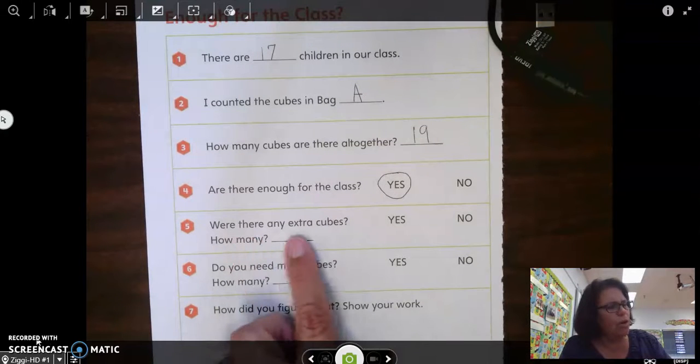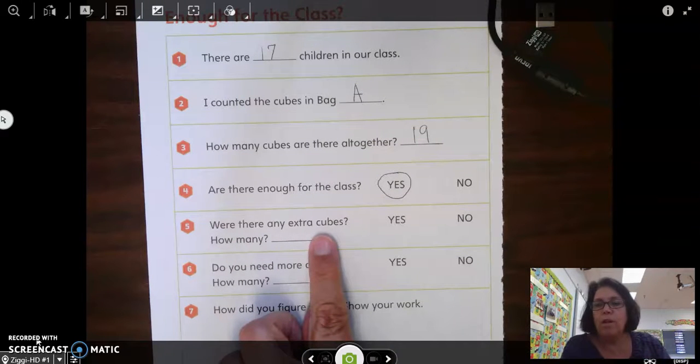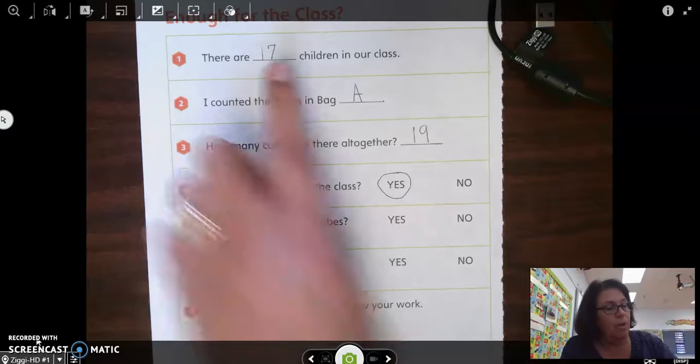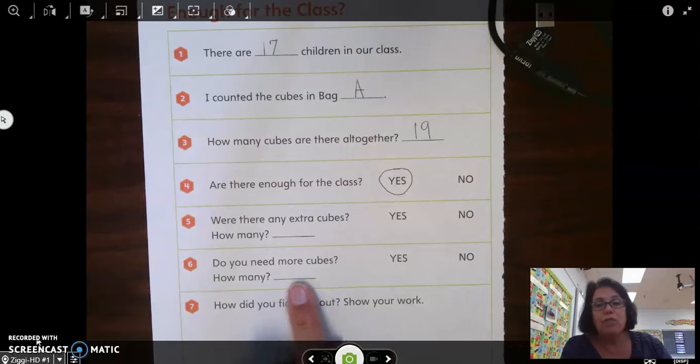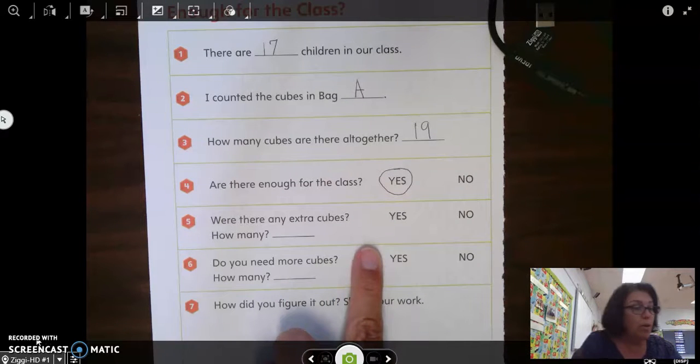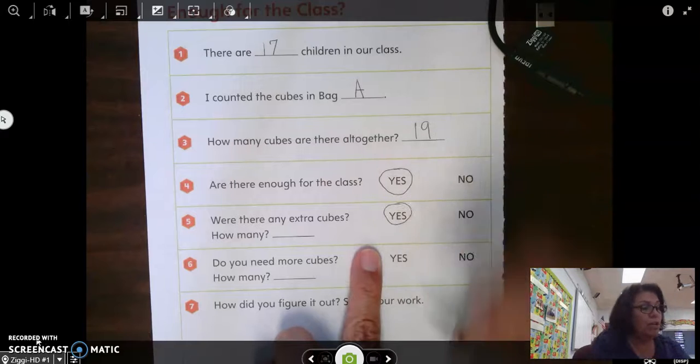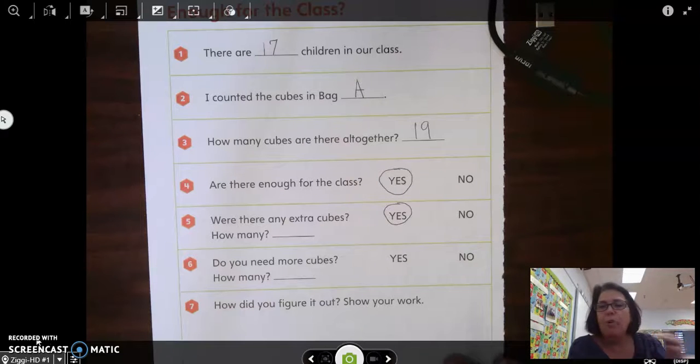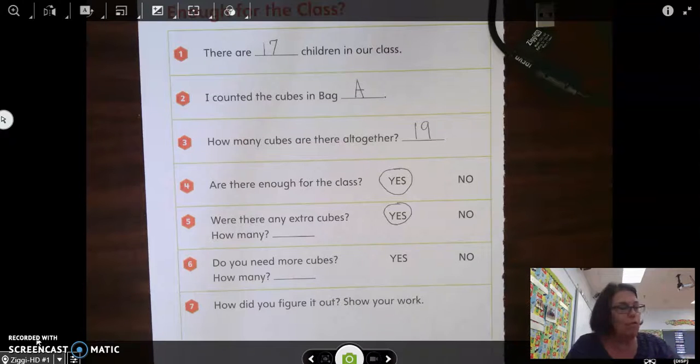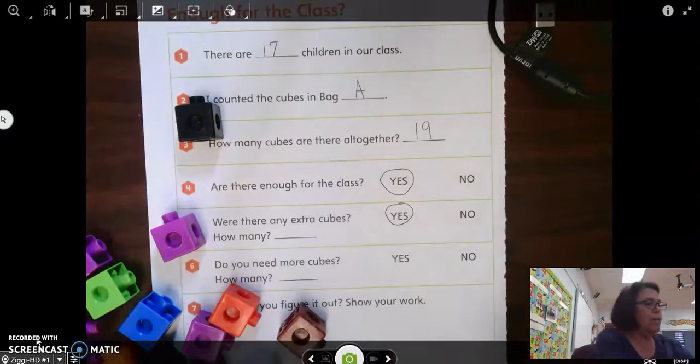Now the question here is, were there any extra cubes? Well, we know we only have 17 students. We know we have 19 cubes. So we already said we have more cubes than children. So now we need to think, how many more are there? Are there any extra cubes? Well, we already know the answer to that question is yes. We do not know the answer to how many there are. So let's get our cubes out of our bag, pull out the 17 for each of the children in our class, and then see what's left over. That's how we're going to solve it this time. And in our next video, we're going to talk about other ways to solve the problem. So we're going to pull out 17.